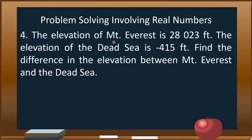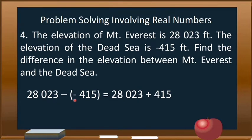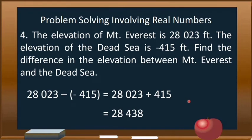For problem number 4, the elevation of Mount Everest is 28,023 feet and the elevation of the Dead Sea is negative 415 feet. Find the difference in elevation between Mount Everest and the Dead Sea. We compute 28,023 minus negative 415. By the rule of subtraction, we change the minus sign to plus and get the opposite of negative 415, which is positive 415. So 28,023 plus 415 equals 28,438. Therefore, the answer is 28,438 feet.